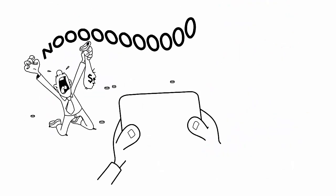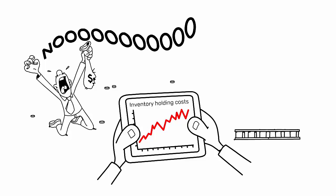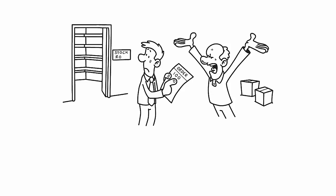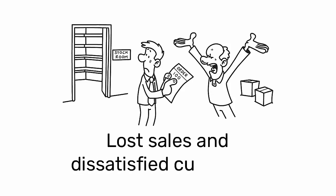Overproduction leads to increased inventory holding costs and the risk of goods becoming obsolete before they can be sold. On the other hand, stockouts can result in lost sales and dissatisfied customers.